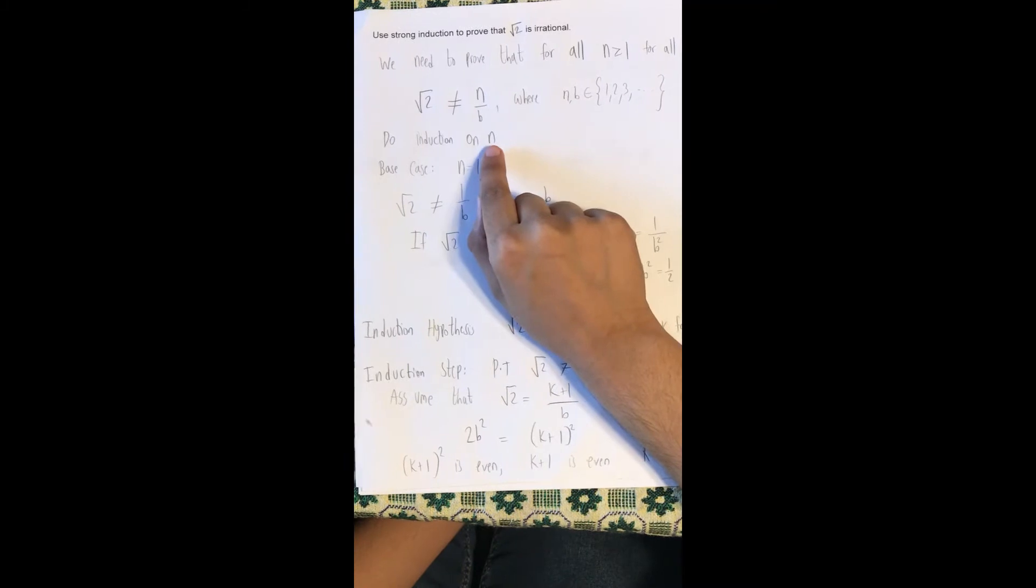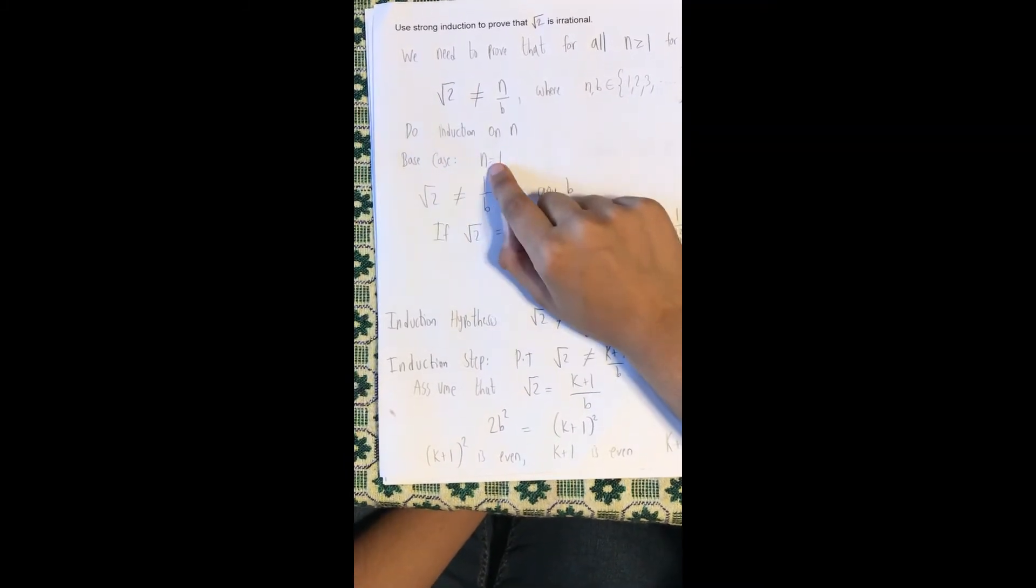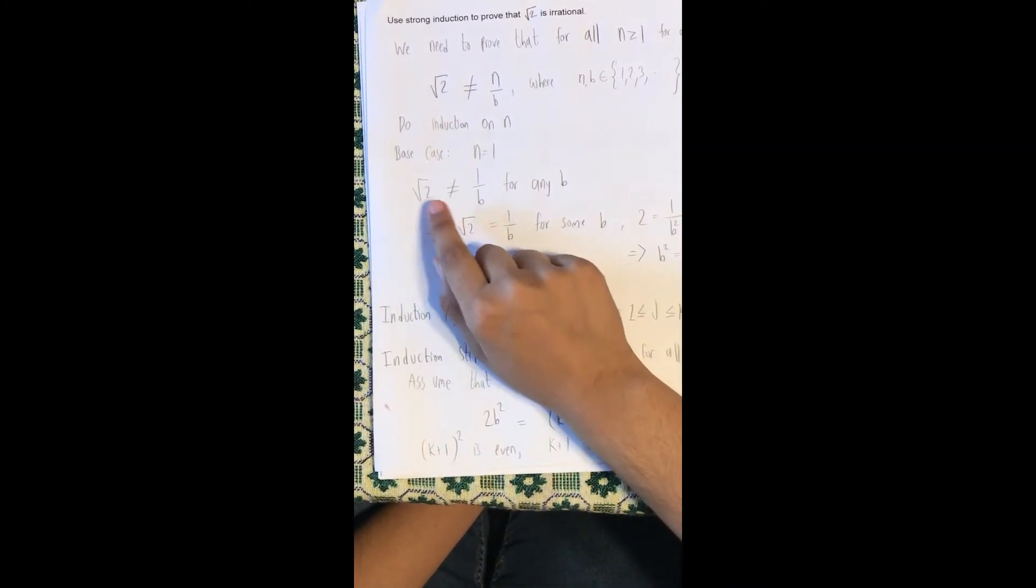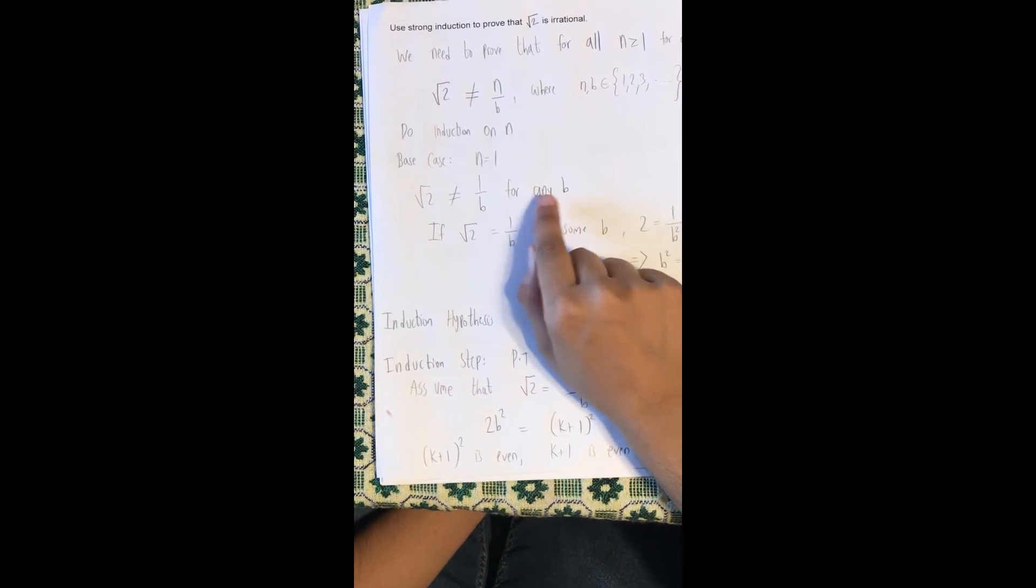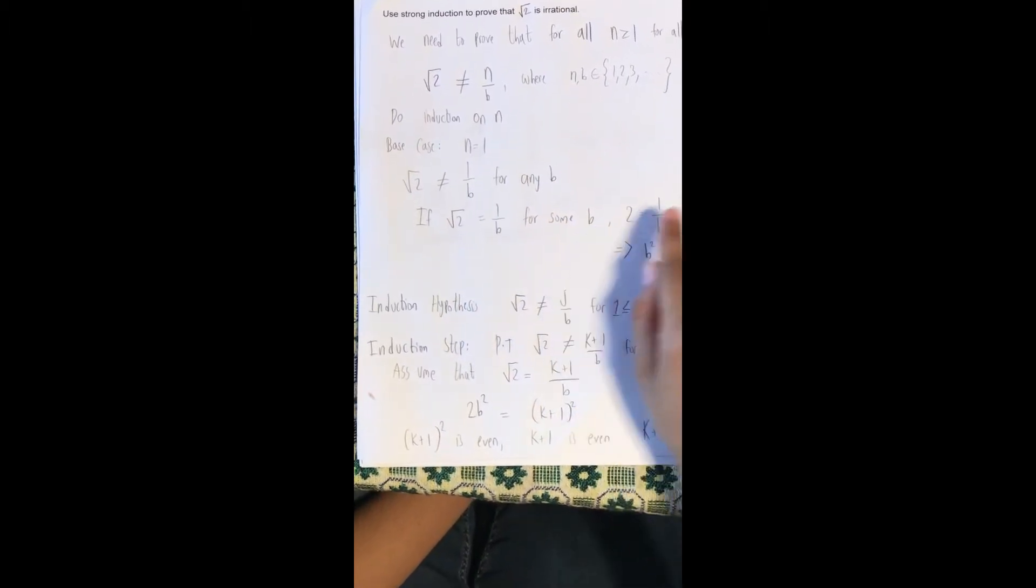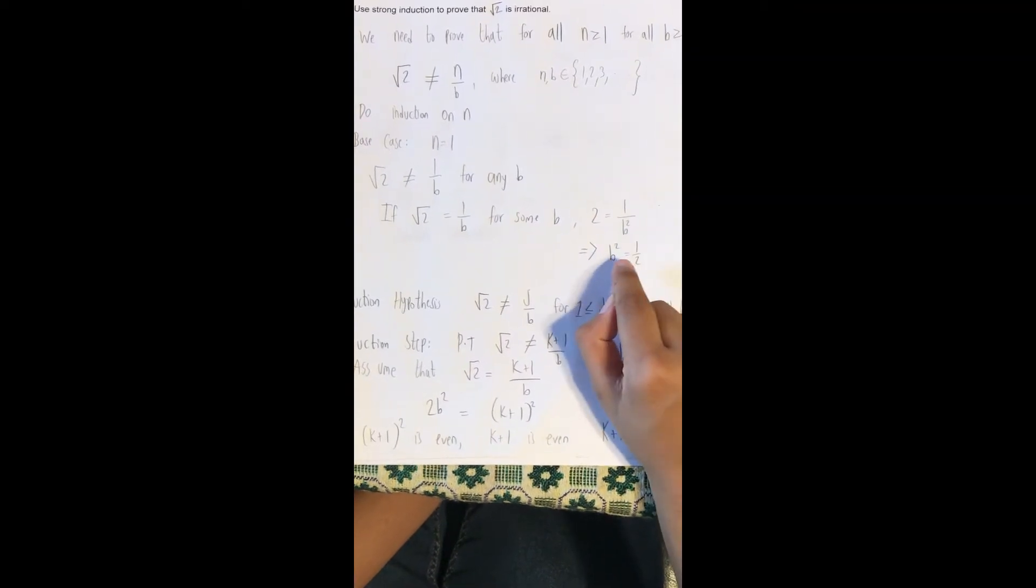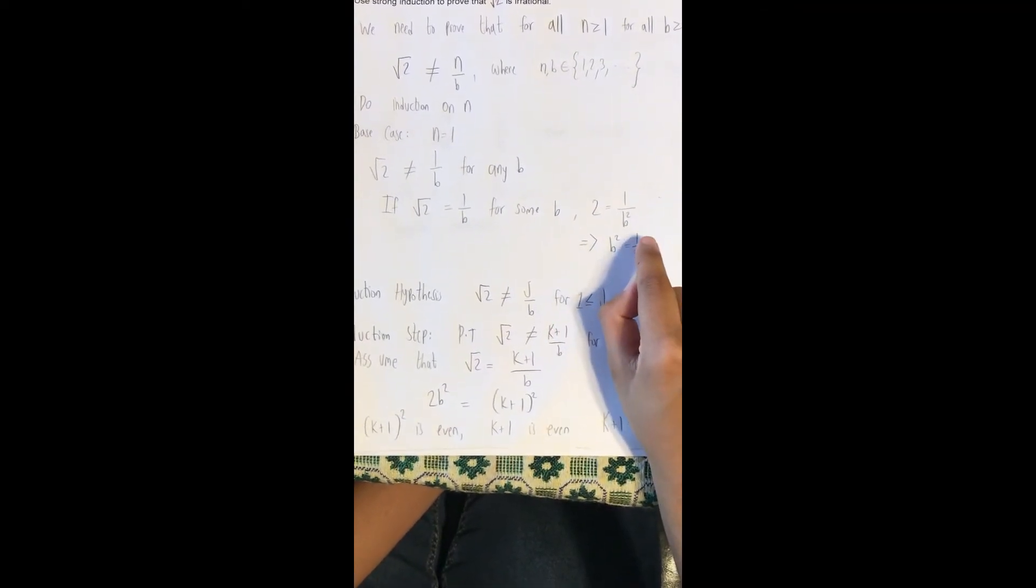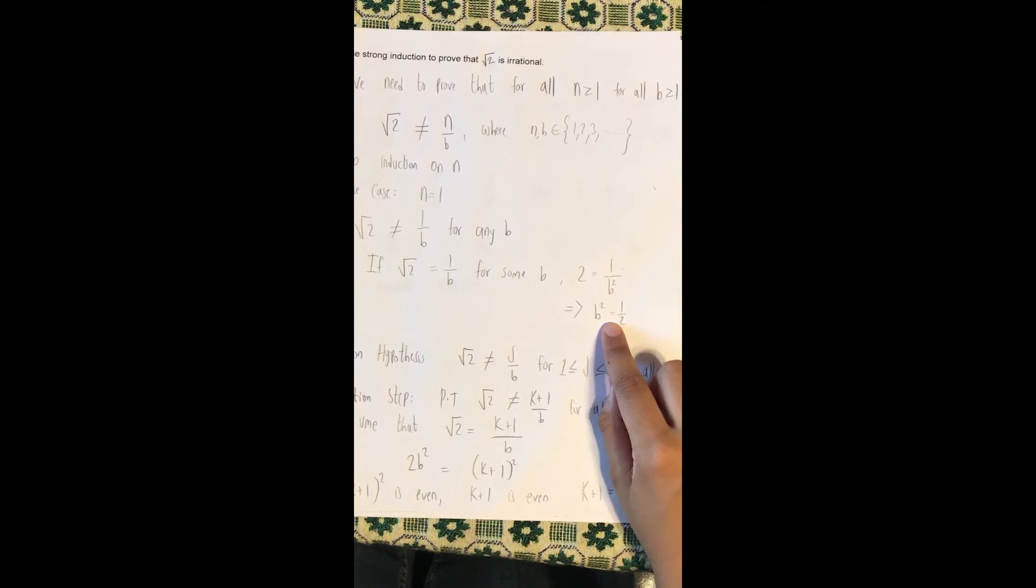We do an induction on n in this case. The base case is when n equals 1, square root of 2 is not equal to 1 over b for any b. If square root of 2 equals 1 over b for some b, then 2 equals 1 over b squared, where b squared equals 1 over 2. This is impossible for any integer b.